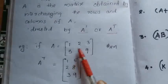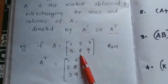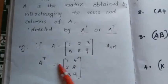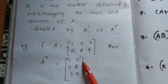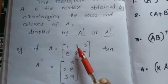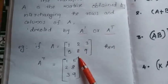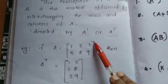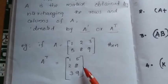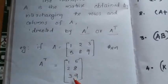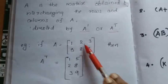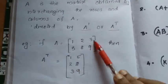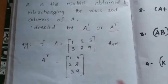I will show you one example. A is equal to the given matrix 1, 2, 3, 5, 8, 9. This is a two-row matrix. How will you get A transpose? The first column becomes the first row, the second column becomes the second row, the third column becomes the third row. We are interchanging the rows and columns, and you will get the transpose of the matrix.